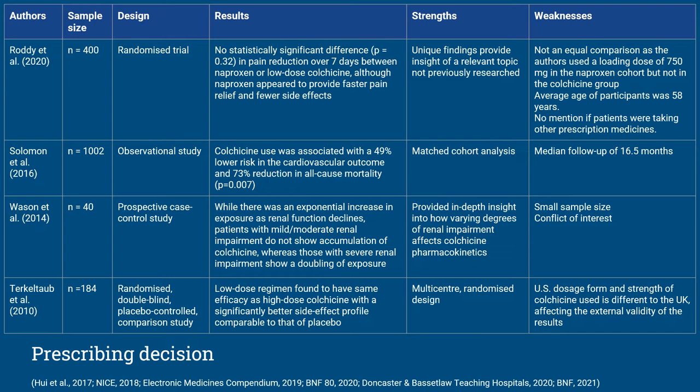Prescribing decision: having established a diagnosis of acute gout, guidelines recommend that the choice of drug should be based on the presence of contraindications and the patient's experience with previous treatments, recommending either colchicine and/or an NSAID as first-line options. In a recent study comparing the effectiveness and safety of naproxen and low-dose colchicine, Roddy and colleagues found no significant difference in pain reduction, although naproxen appeared to provide faster pain relief and fewer side effects. However, the average age of participants was over 15 years younger than my case, and the authors failed to mention what medications patients were on, impacting the generalizability of their findings. A further limitation was the use of a loading dose with naproxen, which could explain the faster onset of pain relief.